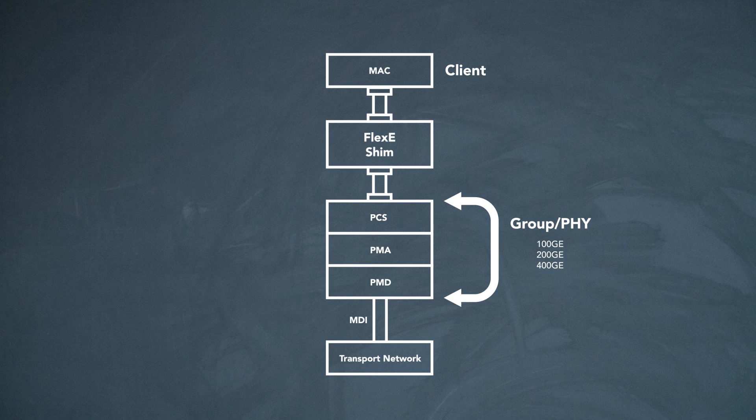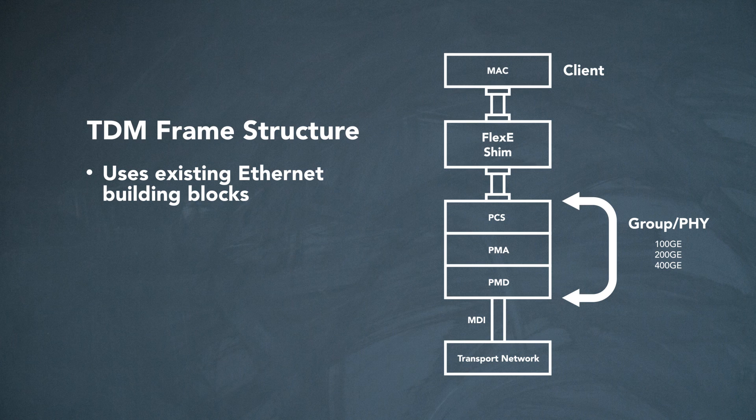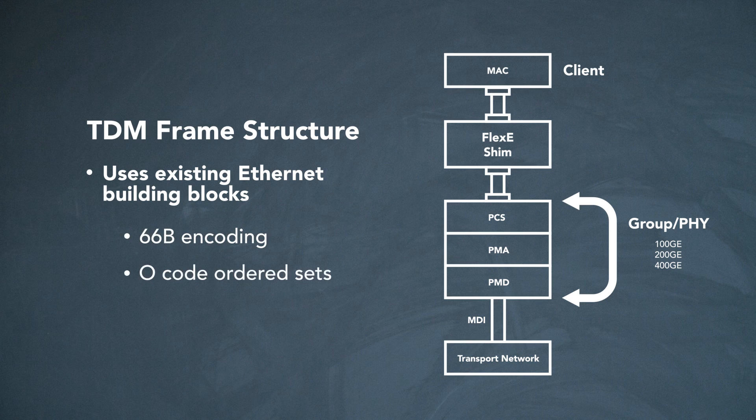It basically adds a new TDM frame structure using existing Ethernet building blocks such as 66B and O-code ordered sets.